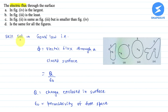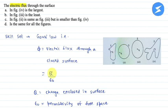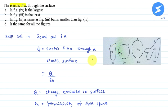To answer this question, the skill set required is Gauss's Law: the electric flux through a closed surface equals Q divided by epsilon-naught, where Q is the total charge enclosed within the surface and epsilon-naught is the permittivity of free space.